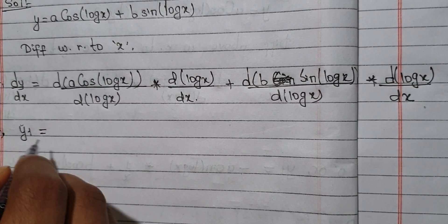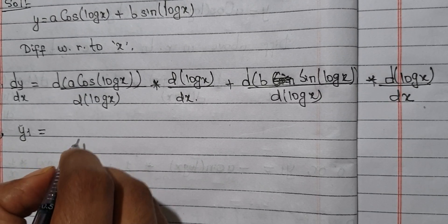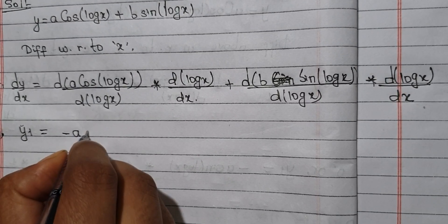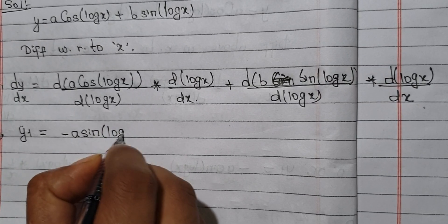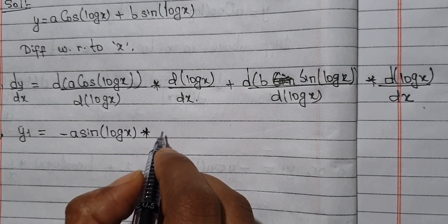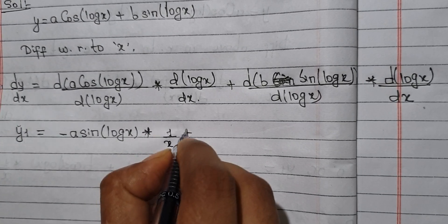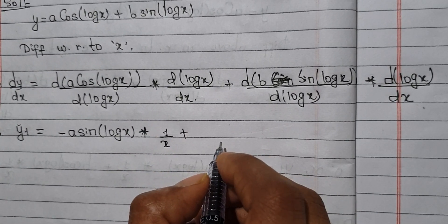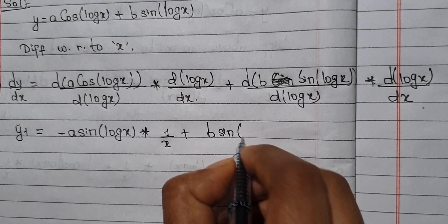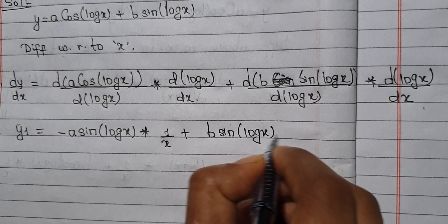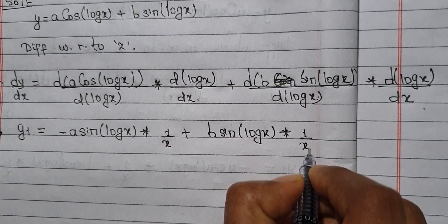Which is equal to: the derivative of cos is minus sin, so we get minus a·sin(log x) into derivative of log x, which equals one by x. Plus: the derivative of cos gives b·sin(log x) into derivative of log x, which equals one by x.